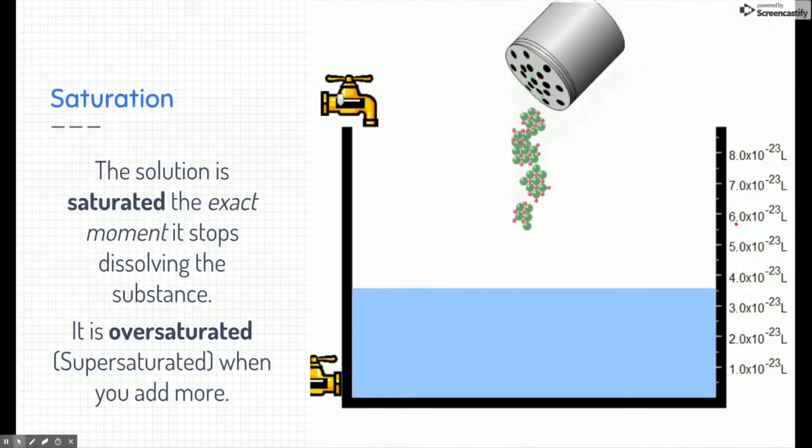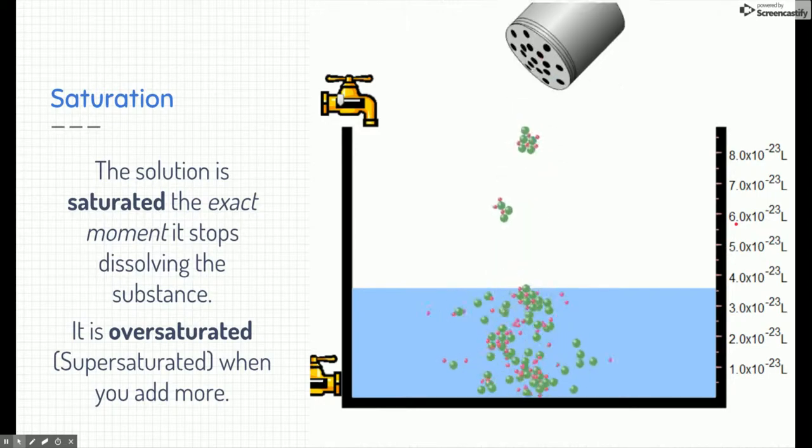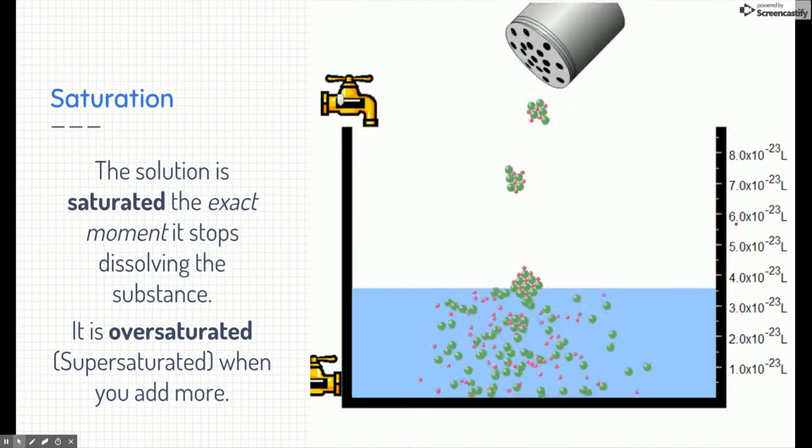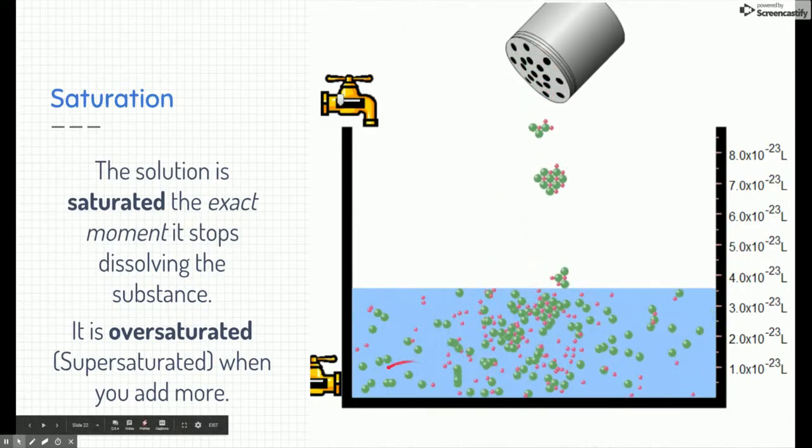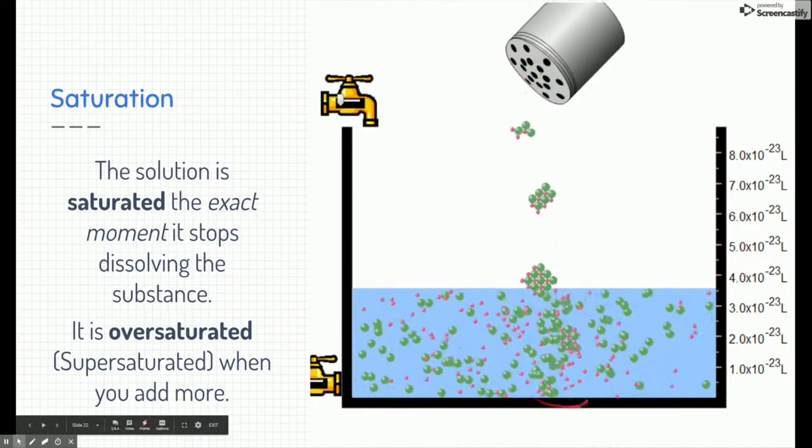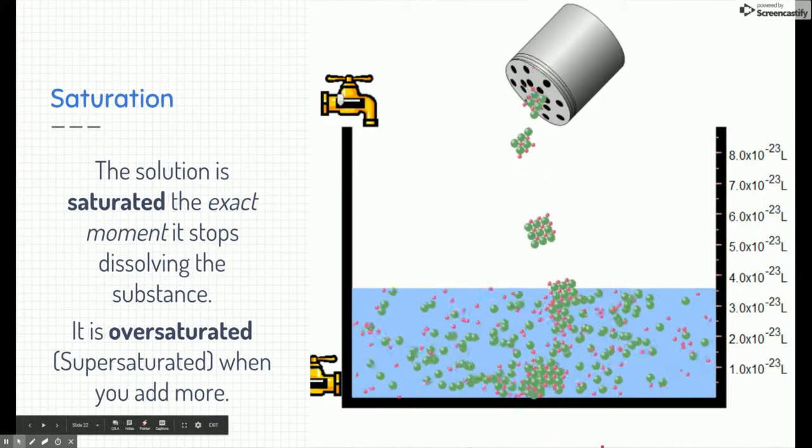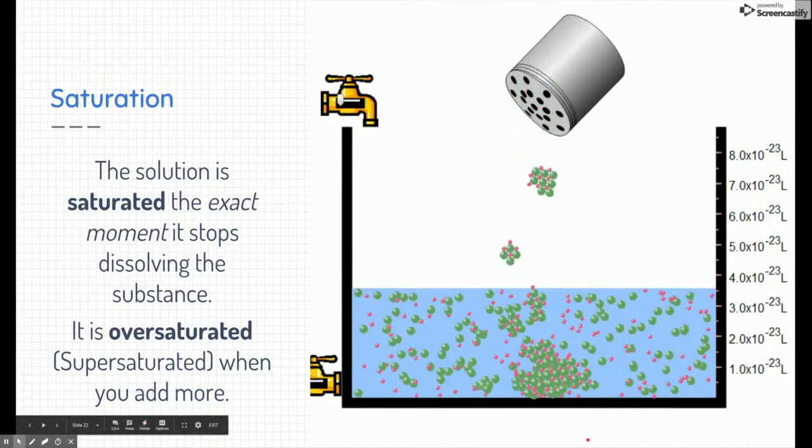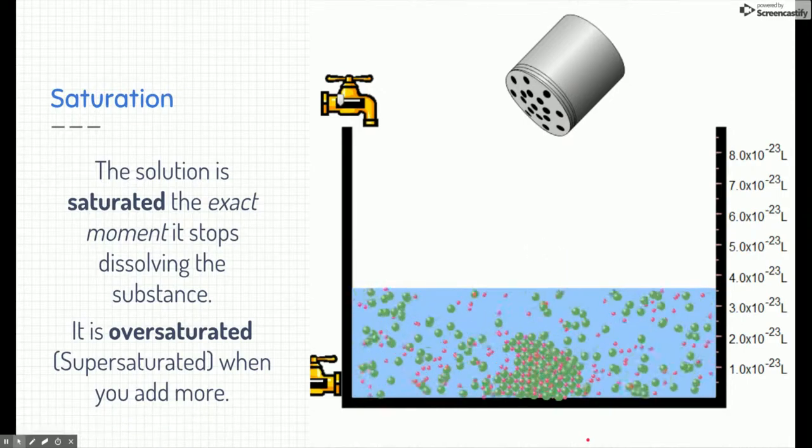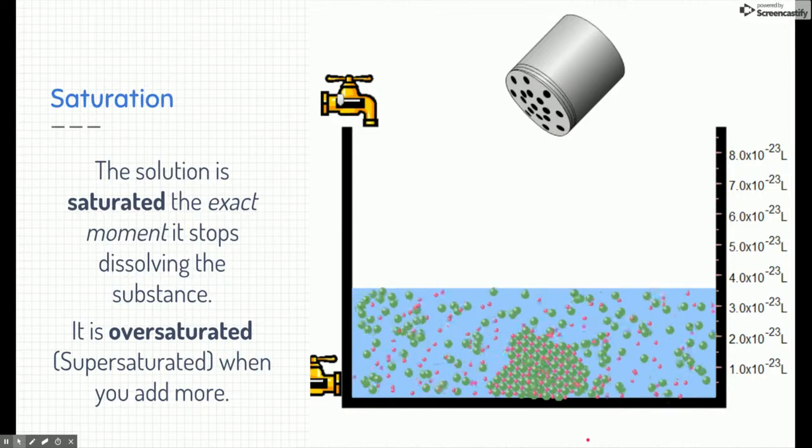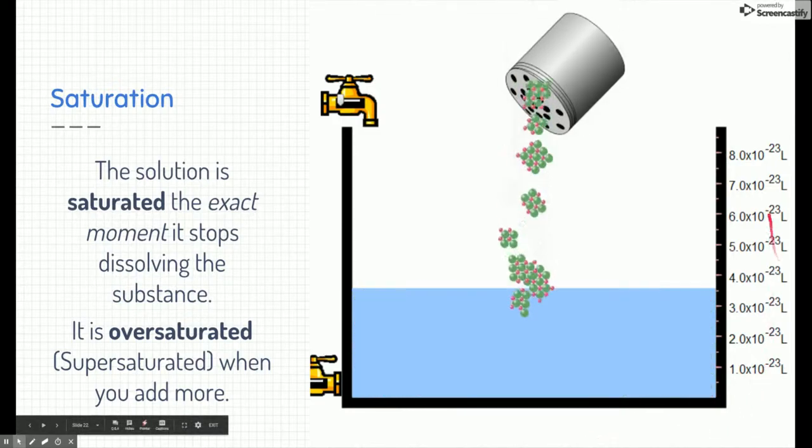We can take a look at that again with this simulation here. I'm going to go ahead and drop some salt crystals in the water, and notice that they're all dissolving. So right now it's at the unsaturated point. But if you look right about here in the bottom, there's going to become a point pretty soon right here. At that point, it stops dissolving crystals. At that exact moment, it's saturated. Now it's oversaturated because no more will dissolve, and I keep adding more. So there's unsaturated, saturated, and oversaturated.